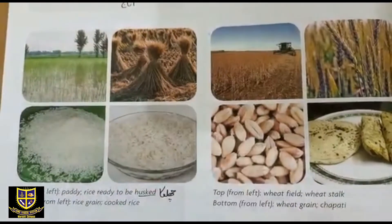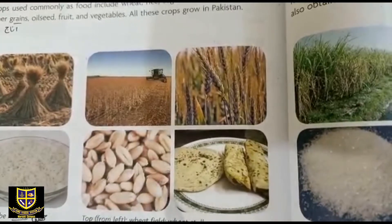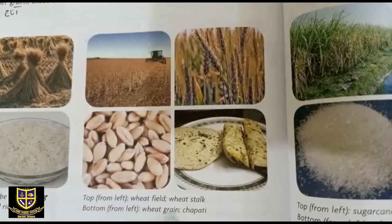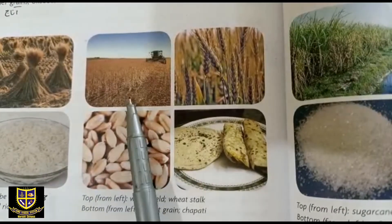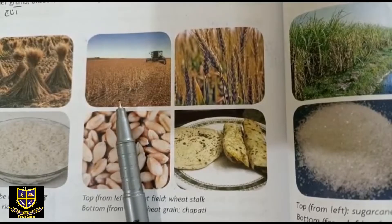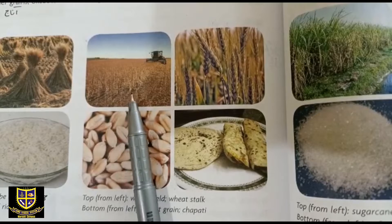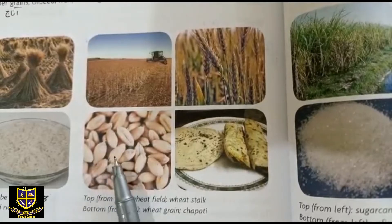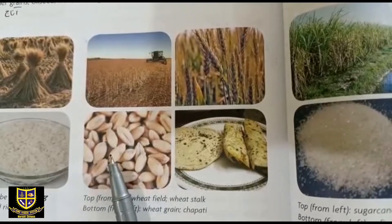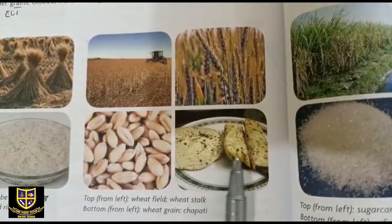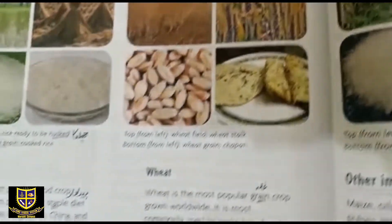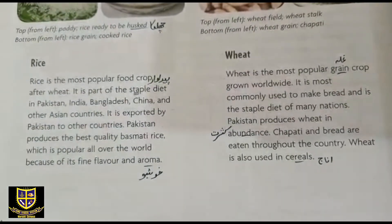اس کے بعد: top from left — wheat field, wheat stock; bottom from left — wheat grain اور چپاتی۔ یعنی گندم کی فصل جب کاشت ہوتی ہے، خشک ہو جاتی ہے، تو ان کی ڈالیوں سے بیج نکالتے ہیں۔ بیجوں کو grind کرنے سے آٹا بنتا ہے اور آٹے سے روٹیاں بنتی ہیں۔ اب ہم سب سے پہلے rice کے بارے میں پڑھیں گے۔